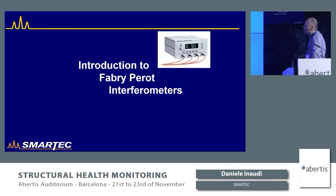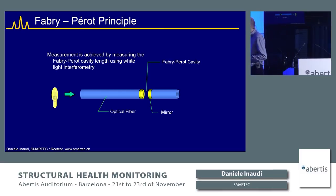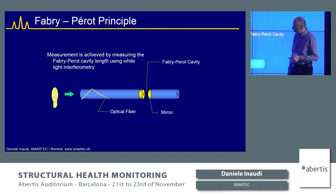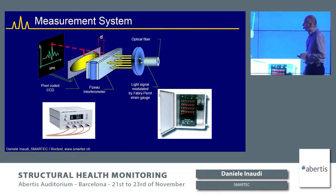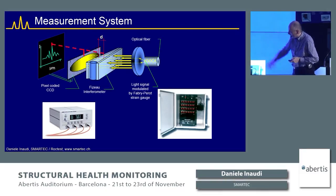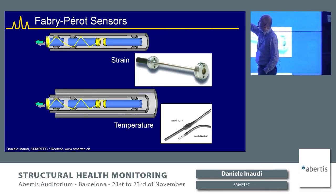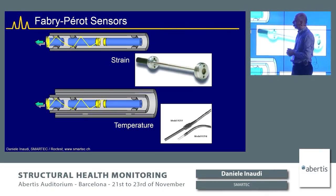Starting with point sensors — the Fabry-Perot interferometer. These are essentially one-to-one replacements for conventional vibrating wire sensors. The measurement principle is based on a cavity: a gap between two fibers. Light is sent in and reflected by two mirrors. The instrument precisely measures the distance between the two fiber faces. If I apply strain to the sensor, this gap changes, allowing strain measurement.